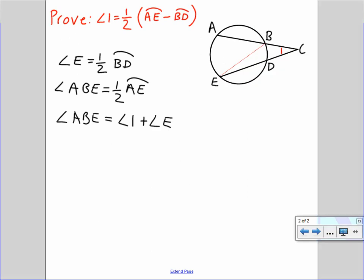Now, by subtraction, we can say that the measure of angle 1 equals angle ABE minus angle E.